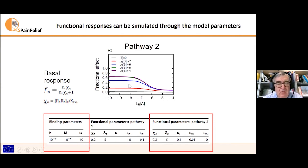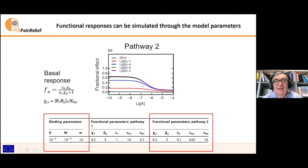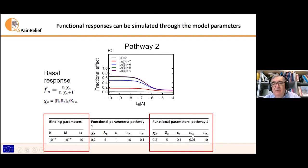But what about A? If we go from the left to the right of the plot, the concentration of A is increasing across all curves, and what we observe is a decrease of the effect. So this means that A should be an inverse agonist. If we look at the intrinsic efficacy of A used in these curves, we can see that it is 0.01, which is lower than that of the free receptor, and because of this A is an inverse agonist — consistent with the values shown in the plot.